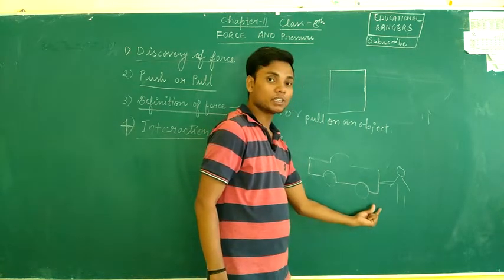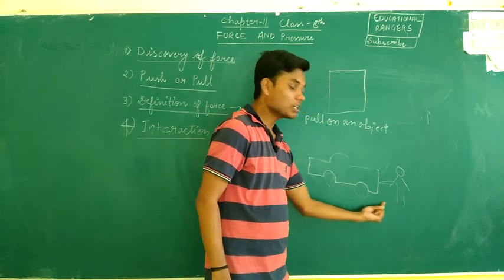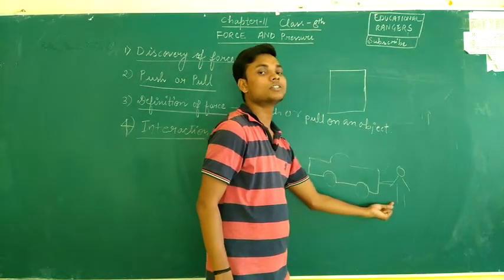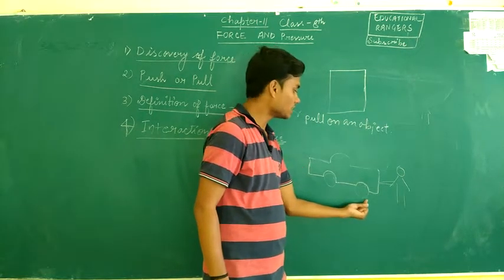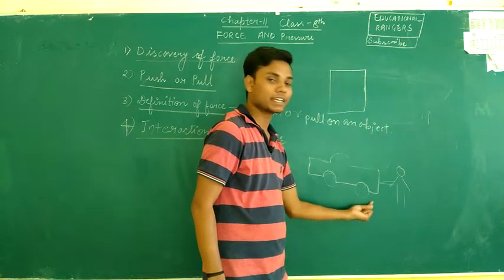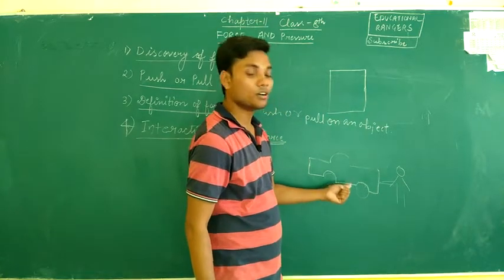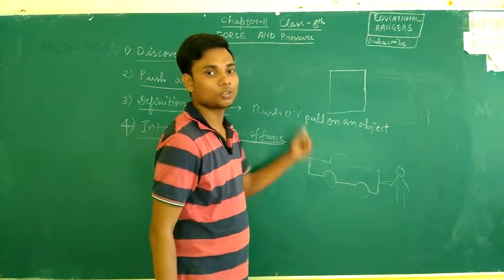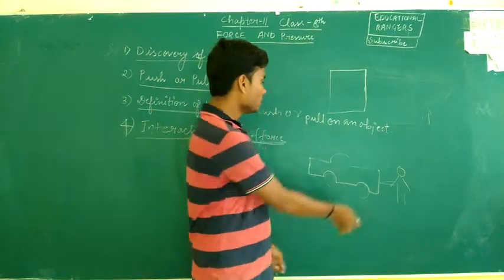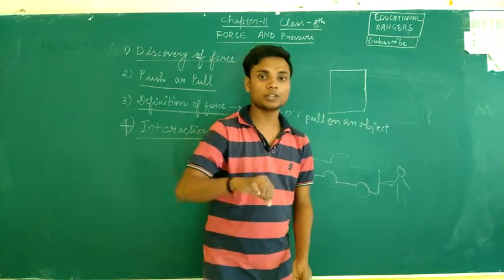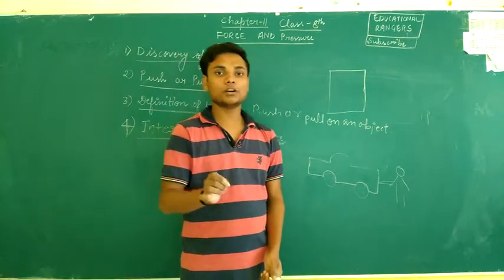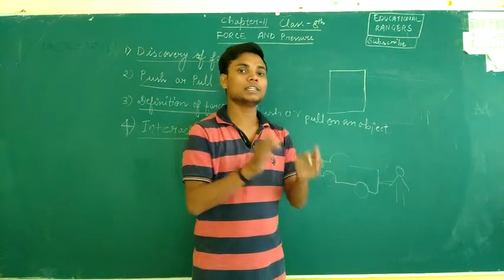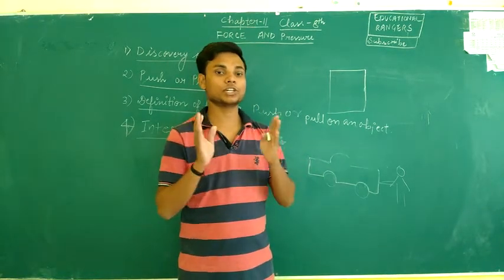Jab ek object doosre object se interact karta hai to us par force lagega. For example, jab ek aadmi apni car ko push karta hai - interaction ho gaya - aur jab ek object doosre object se interact karega to us par force lagega aur ye car move karna shuru kar degi. From this example we may conclude that if one object wants to apply force on another object, there must be interaction between them.